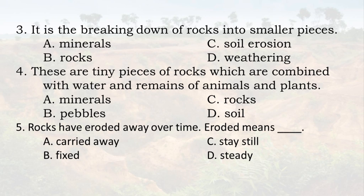These are tiny pieces of rocks which are combined with water and remains of animals and plants. A. Minerals, B. Pebbles, C. Rocks, D. Soil. Rocks have eroded away over time. Eroded means: A. Carried away, B. Fixed, C. Stay still, D. Steady.